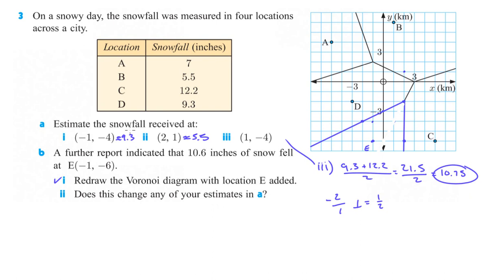Does this change any of your estimates in A? Well, let's see. So (-1, -4), 1, 2, 3, 4. Yes, it does now. Part I should be closer to E, which we just figured out is 10.6. So now we have E is at 10.6. So this snowfall here should be closer to 10.6. 2 and 1 is not affected. 1 and -4 was right here. So that one should be also E, so we wouldn't have to do this estimate. It would now be, so part I, I would now be about 10.6 as well. Okay?